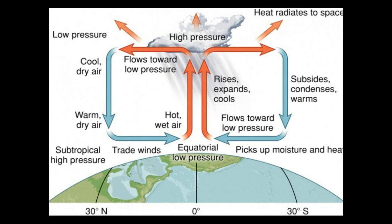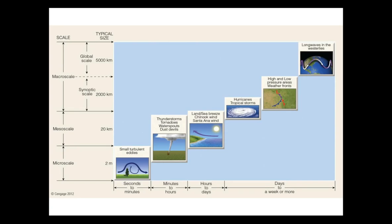At the surface, friction forces allow air to move toward low pressure and away from high pressure. Remember: always high to low. These larger-scale flows occur at what is called a global scale.